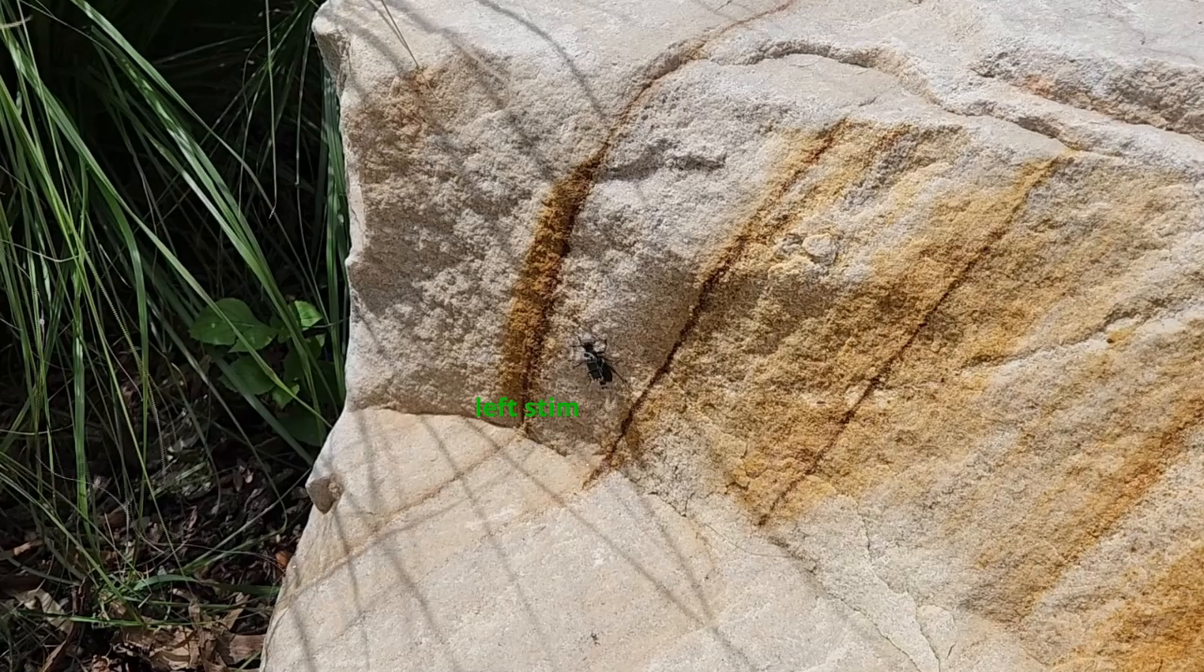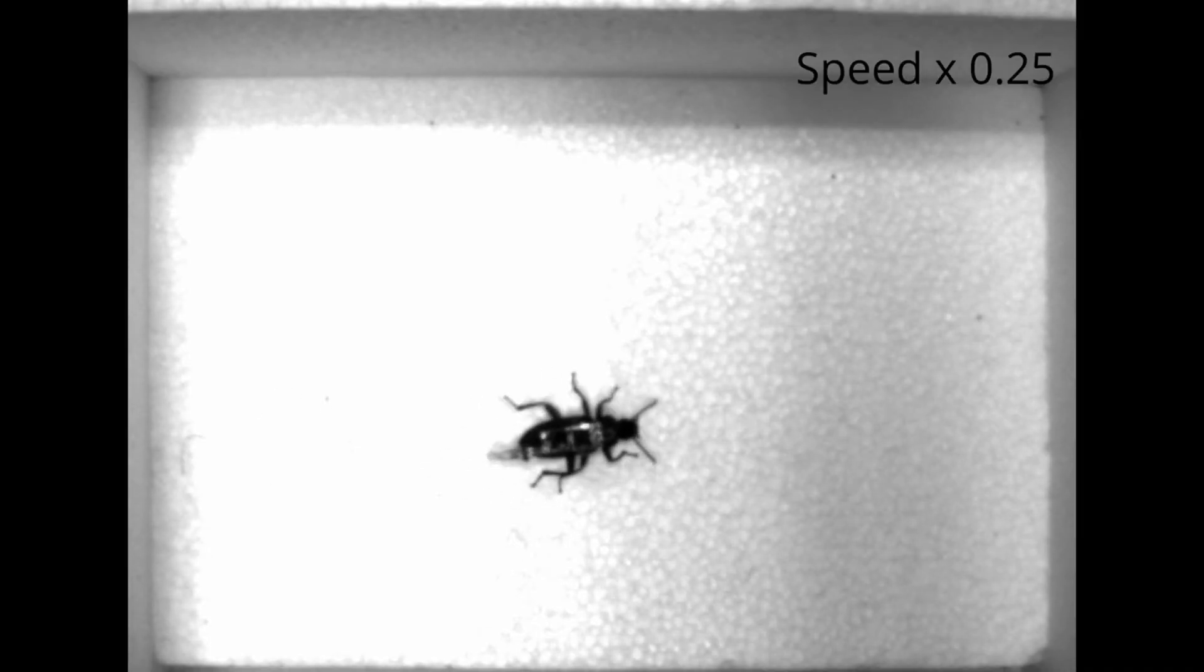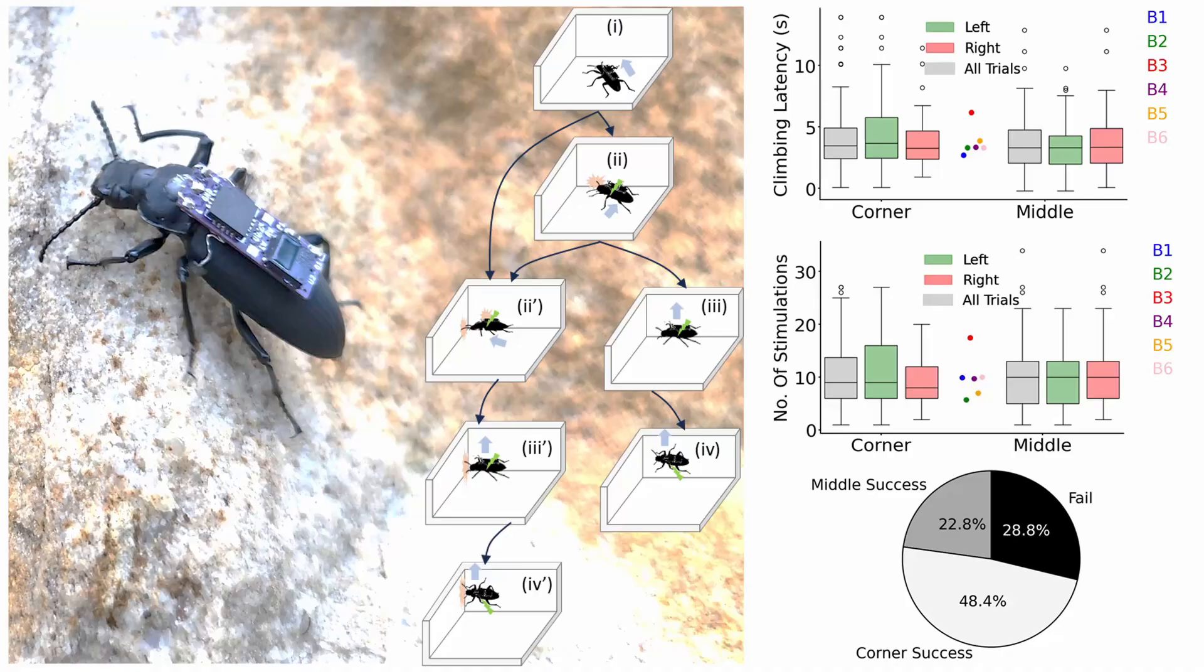Researchers from the University of Queensland have successfully turned Darkling beetles into remote-controlled search and rescue tools by fitting them with tiny backpacks equipped with microchips and electrodes, making them able to move on command, climb over obstacles, and navigate through the most chaotic disaster zones.